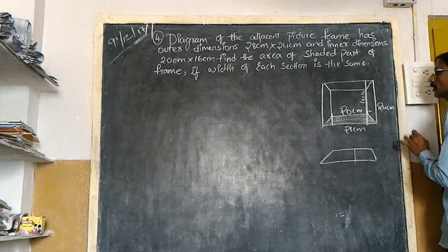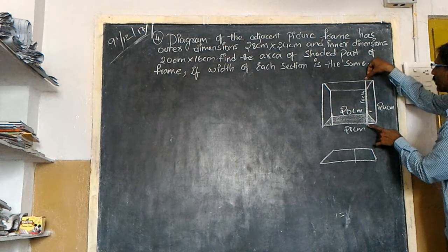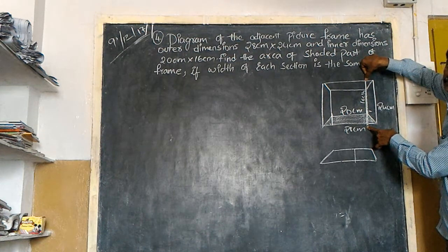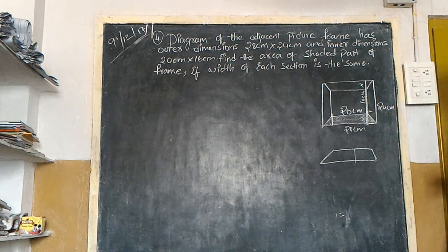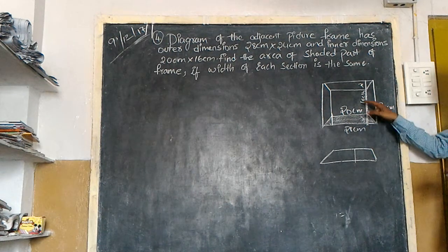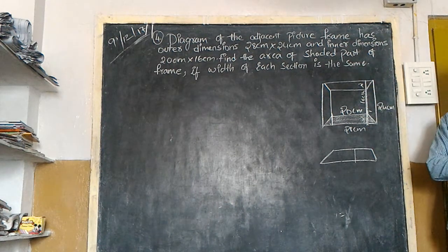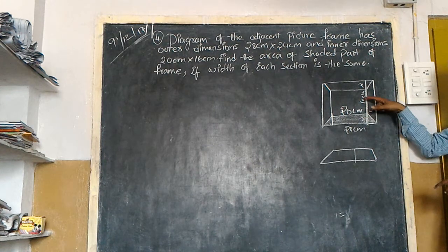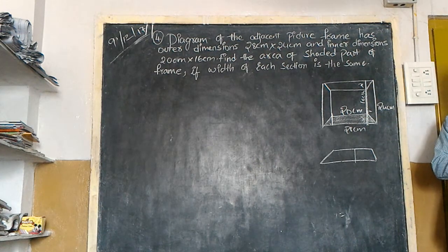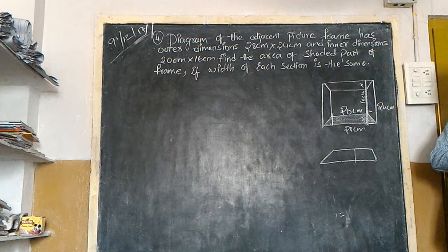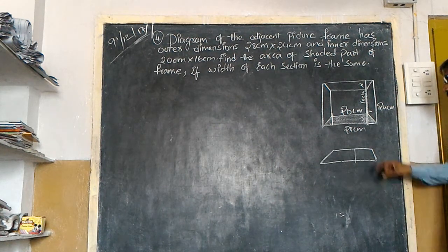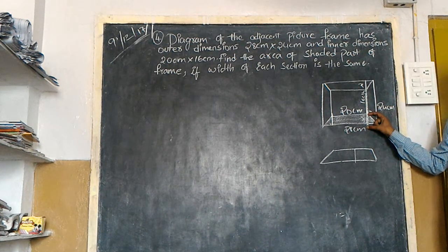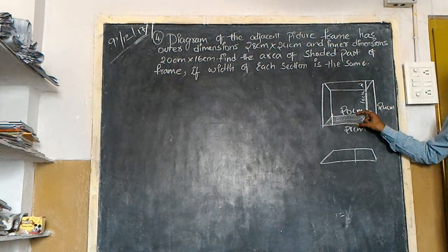From here to here, how much? Sixteen. Here to here, how much? Twenty-four. Why are we taking x here? X is the distance between these two line segments.